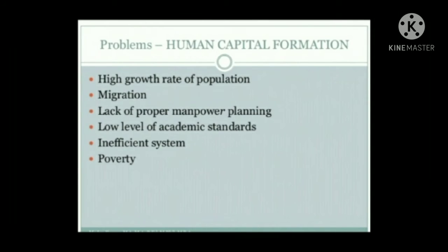Problems of human capital formation. First, high growth rate of population: a continuous rise in population has adversely affected the quantity of human capital, reducing per head availability of facilities. Second, migration: migration is the main cause of brain drain — people migrate from one place to another in search of better job opportunities and higher salaries, leading to the loss of quality people like doctors, engineers, etc., who are rare in developing countries, and the cost of such loss is very high.